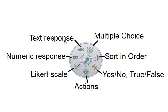They can text in a response, meaning they could type in a word or a sentence up to 160 characters. They can type a numeric response. They can use a Likert scale of say low to high. These are different actions. You can also send the devices a yes, no, or true, false question. You can send them a sort and order question, and you can send them a number of different types of multiple choice questions.